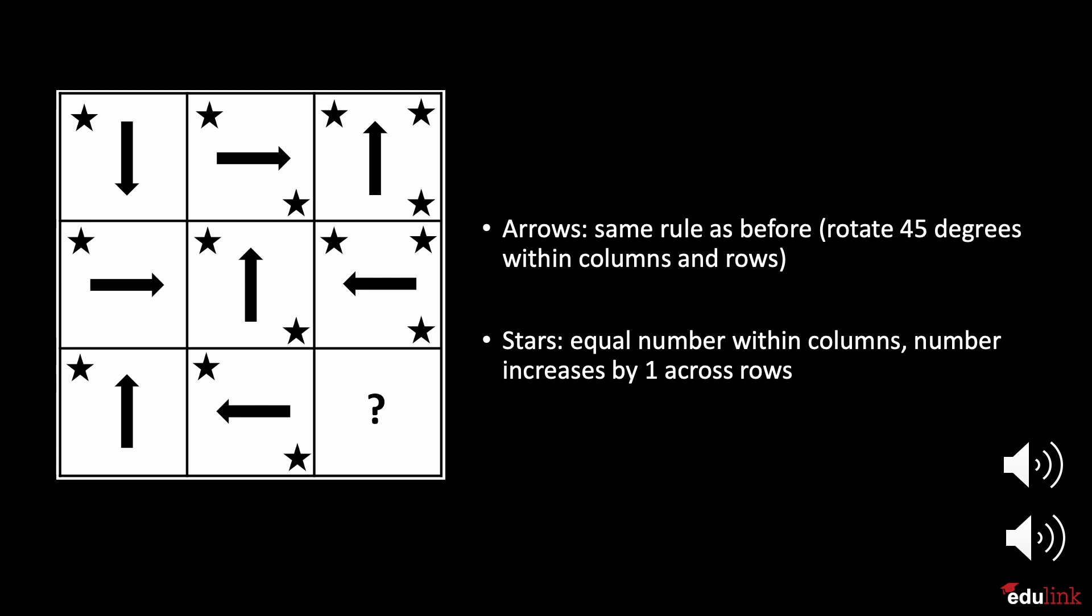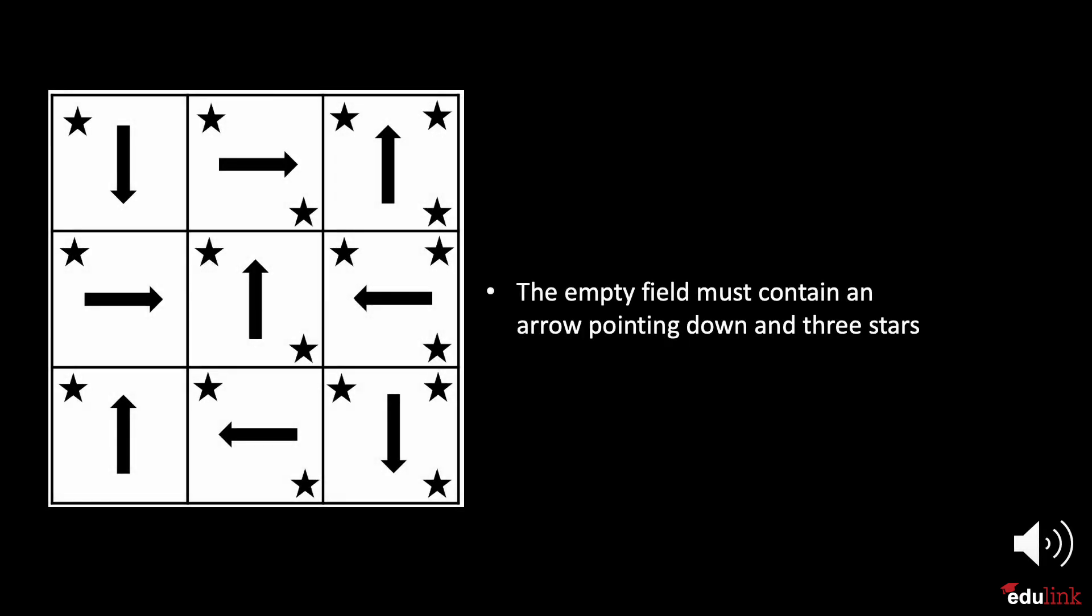Can you determine what goes in the empty field? The empty field must be filled with an arrow pointing down and 3 stars. You've probably noticed that in this example, it was helpful to break down the pattern into individual elements, in this case, arrows and stars, and to further look at each element by columns and rows.